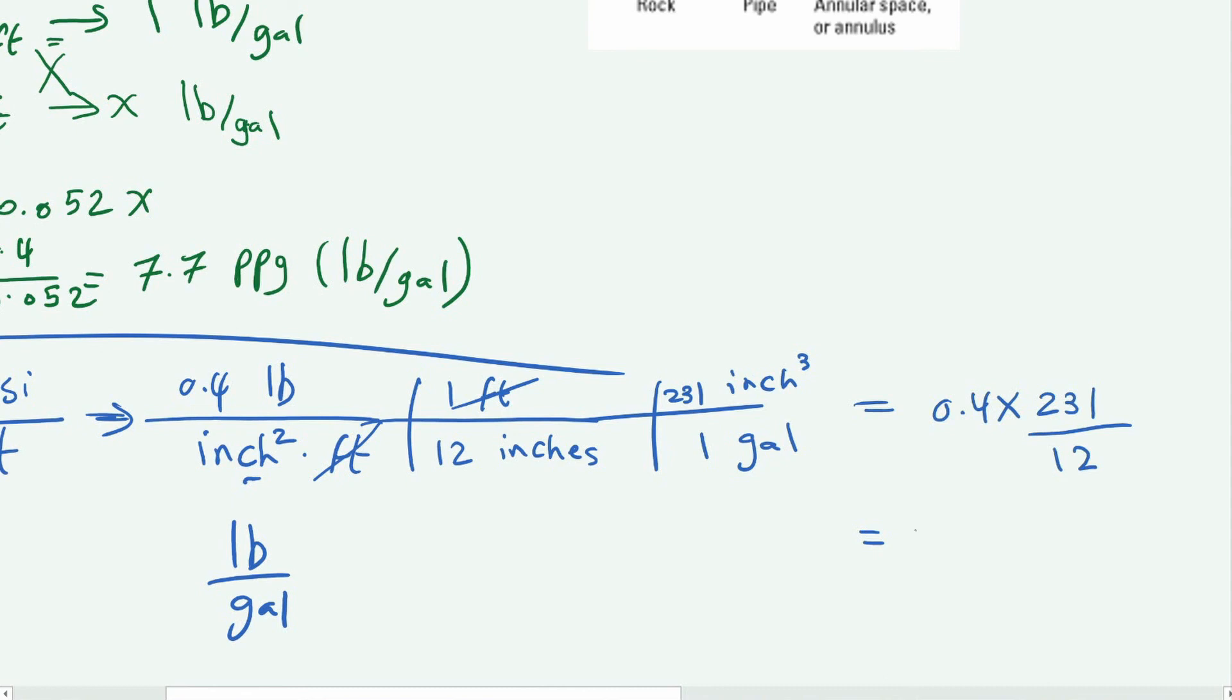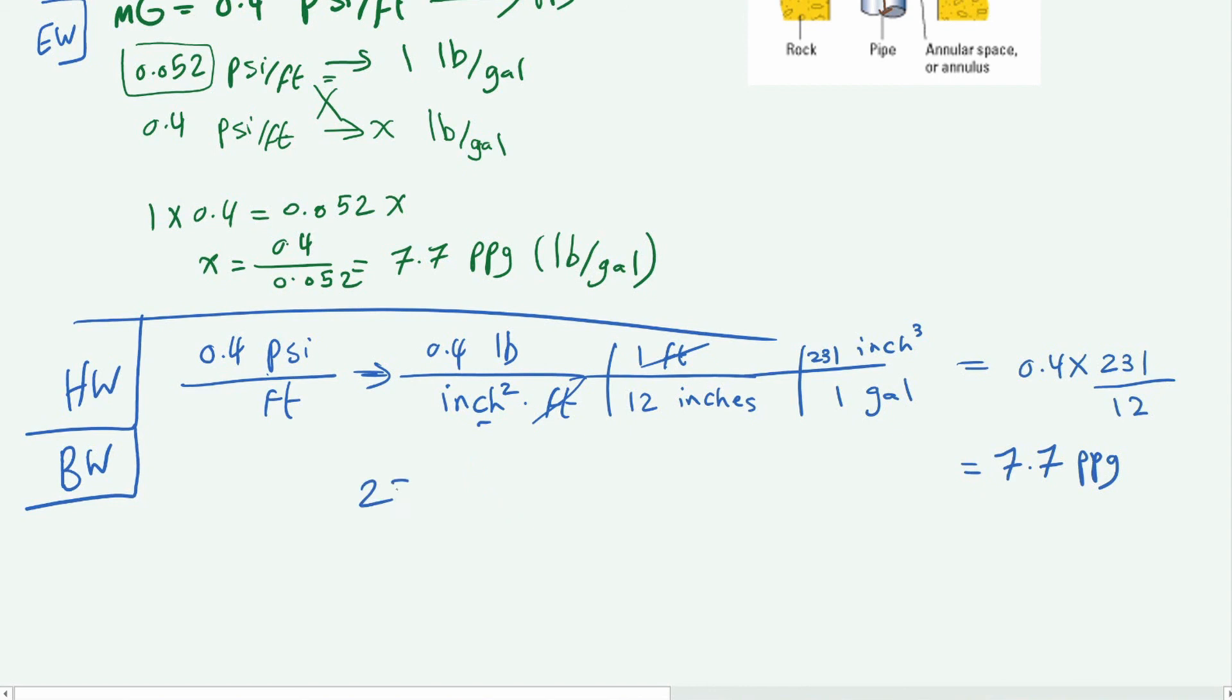So 231 over 12 is just equal to 1 over 0.052. Now you would ask, why would I go through all this to get to the same thing? That's because in the future you don't know, maybe you would be using any other units and you want to convert but you don't have the constant. So now you know how to get the constant in case you're in that trouble.